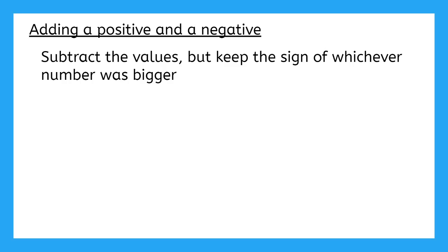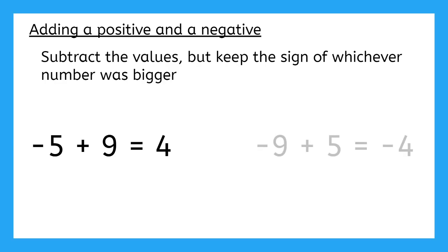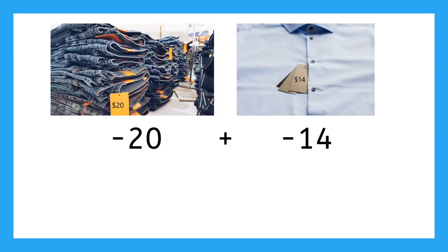Both of those examples involved adding a negative with a positive. The rule of thumb is that the result will keep the sign of the largest number. So if you have more than you owe, you still have money left over. But if you owe more than you have, you still owe money — you can't pay off the debt yet.